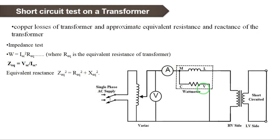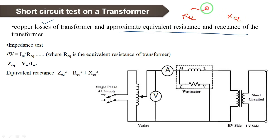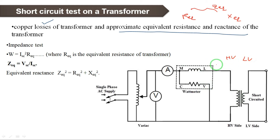Next, the short circuit test. Compared to the open circuit test which gives core losses, the short circuit test gives copper losses and helps find the approximate equivalent circuit — equivalent resistance R_eq, equivalent reactance X_eq, and total equivalent impedance Z_eq. In the short circuit test, the LV winding is short-circuited and the supply is connected to the HV winding.